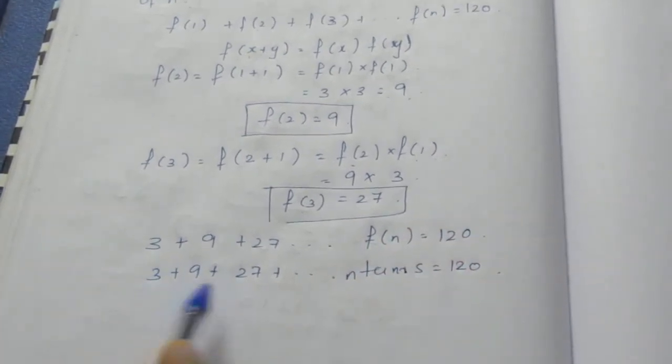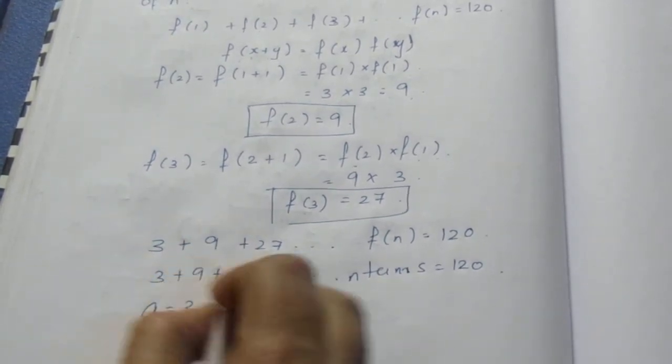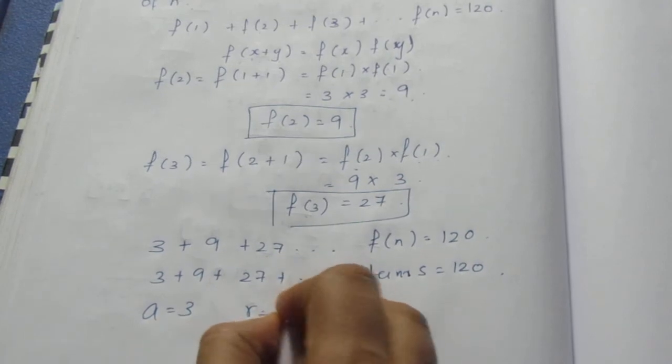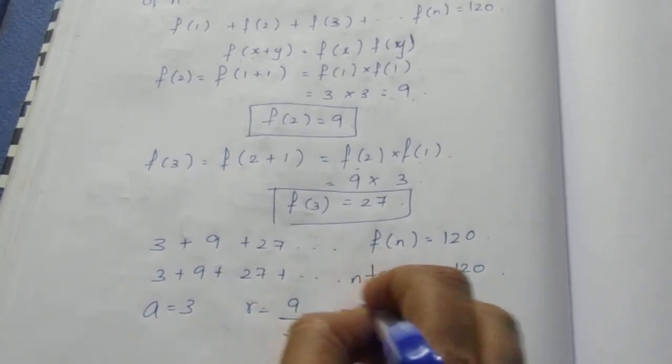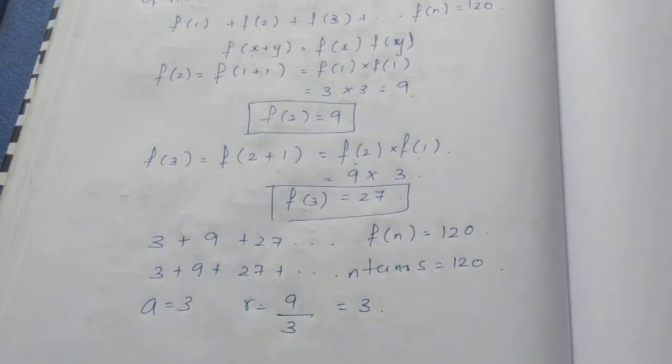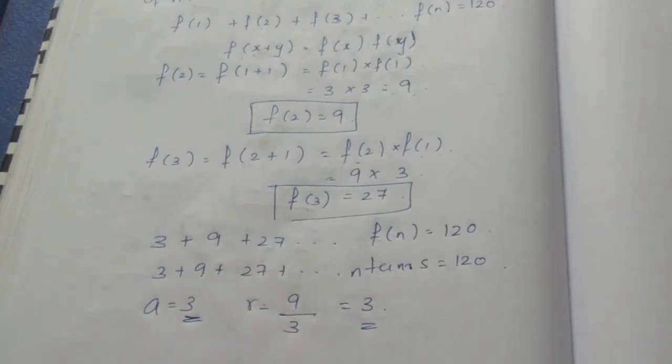If you check, this is a geometric progression. Here a equals 3, and r equals t2 by t1, which equals 3. You can verify: 9 divided by 3 equals 3, and 27 divided by 9 equals 3, so the common ratio is 3. The first term is 3.